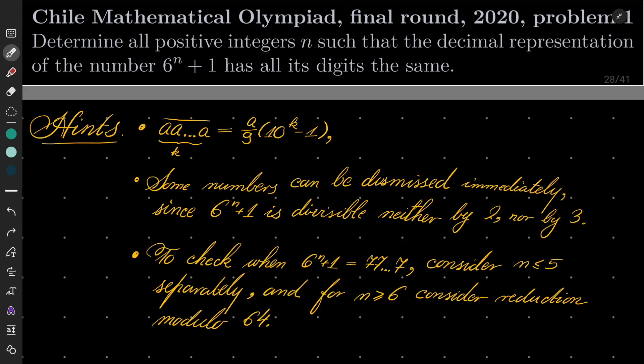First of all, notice that if we have a number which has only digits a, it can be written as a over 9 times 10 to the power of k minus 1, where k is the number of digits.